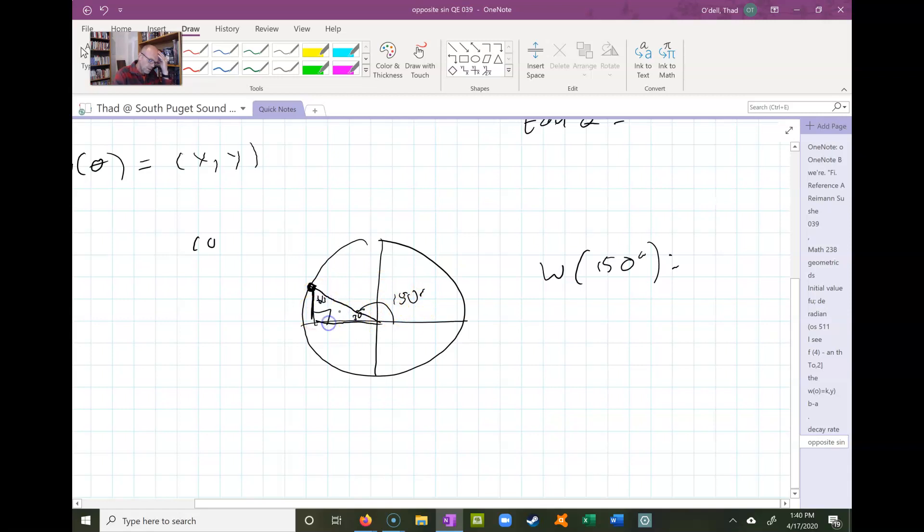So we know the coordinates of this point are the long side of a 30-60-90 triangle, which is √3 over 2. And I'm going to the left, so it's negative. The short side of a 30-60-90 is one half, and it's going up, so it's positive. So that would be the result of the wrapping function at 150.